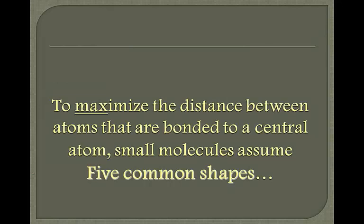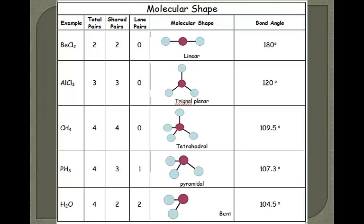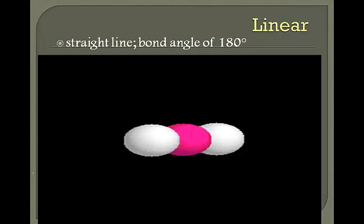Small molecules assume five common shapes, and we're going to be using a reference sheet to help us identify the molecular shape. You'll be given this sheet — you won't have to memorize it — but you will have to be able to read it. The first molecular shape is linear.